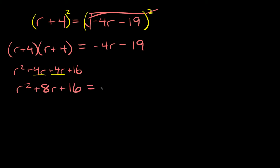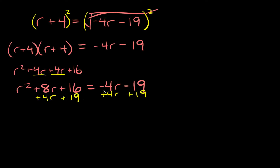That equals the other side: negative 4r minus 19. Now we want to put all our terms on one side since we have a quadratic and we'll need to factor it. We add 4r to both sides and add 19 to both sides. The right side cancels to zero, and simplifying the left side gives us r squared plus 12r plus 35 equals zero.